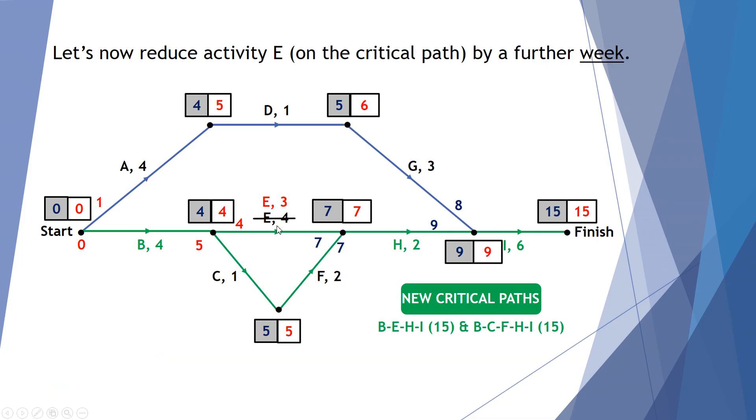However, E here, we can still reduce that by a further 1 week. We had from B to C to F a value of 7 weeks. When we reduce activity E down to a value of 3 by reducing it by 1 week, it takes 4 to get B completed. A further 3 creates 7. So we've now dropped this to an equal 7 with this particular path F and path E. So effectively, we've created two new critical paths.